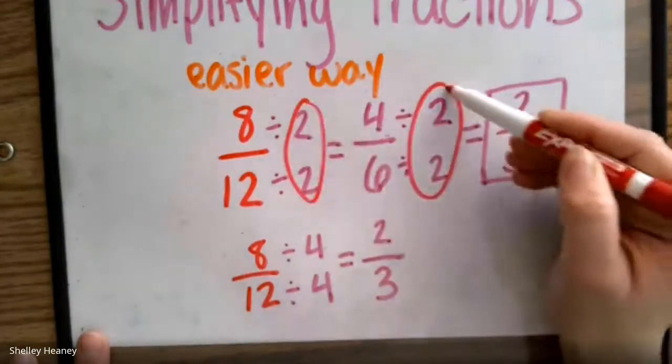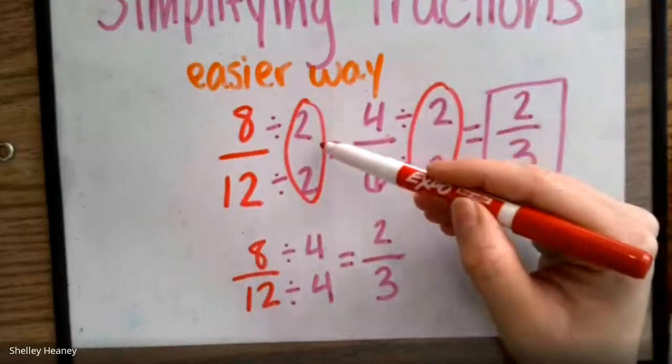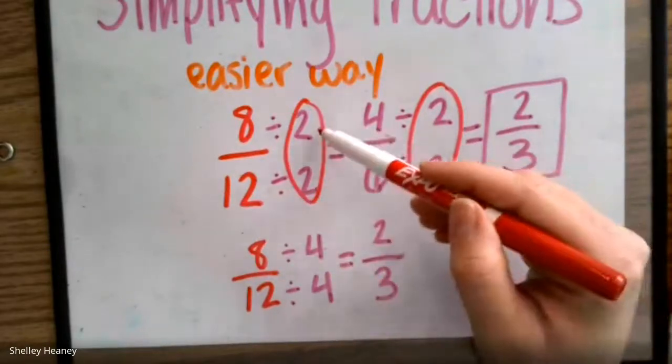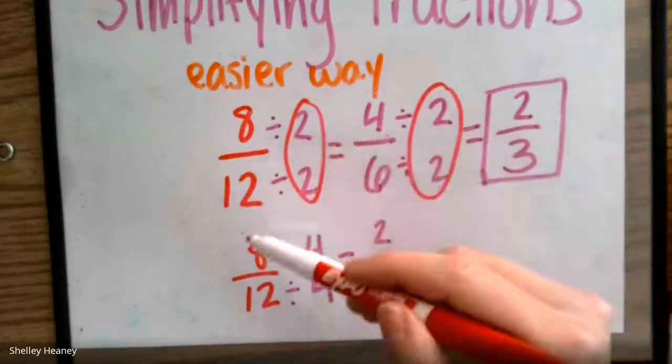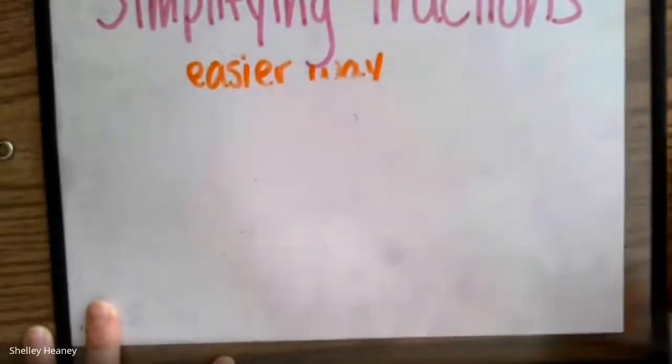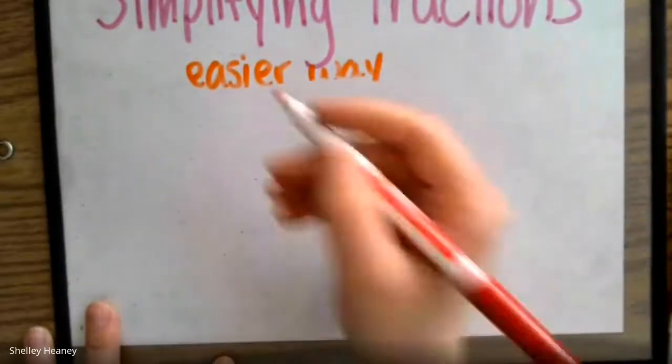We divided by 2 twice. 2 plus 2 is 4. So we could have done by 2, 2 times, or by 4.